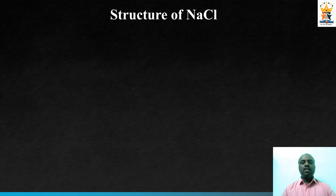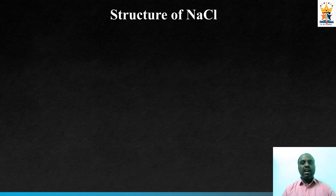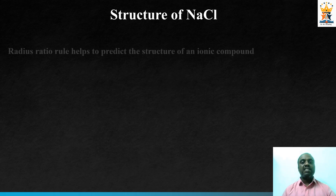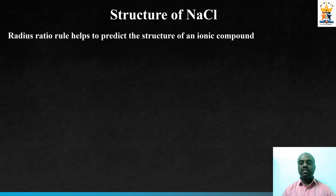Now let us discuss about the structure of sodium chloride. Sodium chloride is nothing but the table salt that we use in our day-to-day life. It is a crystalline compound and its structure is also called rock salt. For an ionic compound, the atoms and ions are present at particular lattice points, and the structure can be predicted by means of the radius ratio rule.